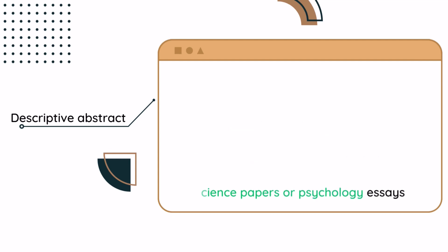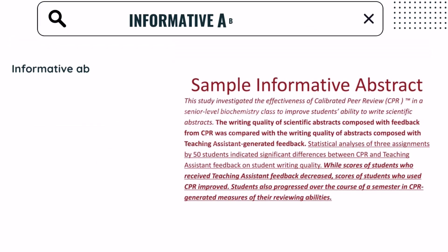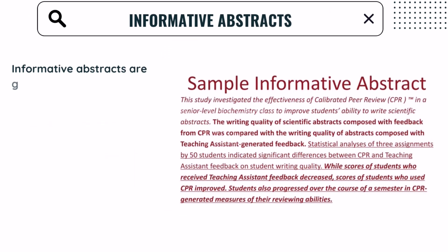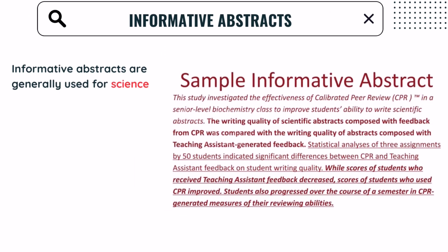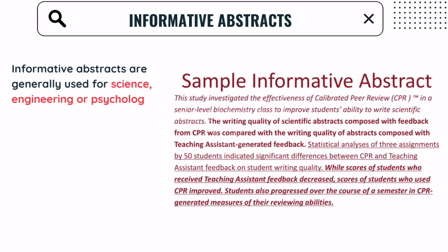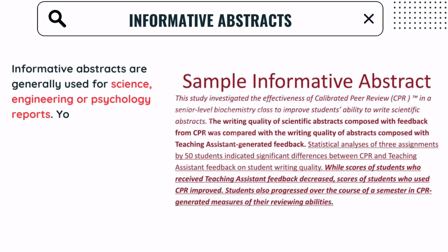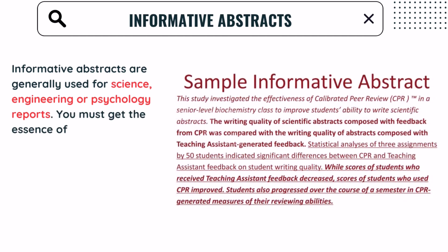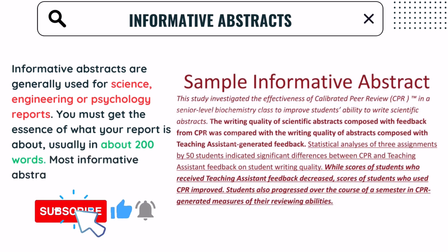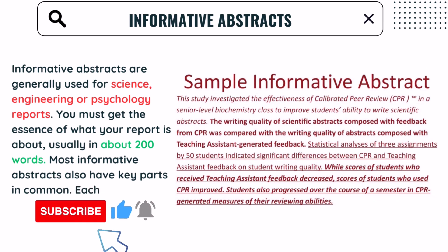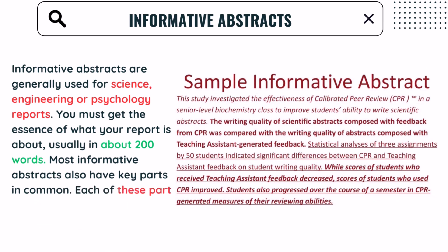Informative abstracts. Informative abstracts are generally used for science, engineering, or psychology reports. You must get the essence of what your report is about, usually in about 200 words. Most informative abstracts also have key parts in common, and each of these parts might consist of one to two sentences.